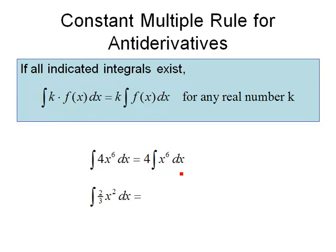And now we can use the power rule to do the antiderivative of x to the 6th. That leaves us with 4 times x to the 7th over 7 plus a constant.